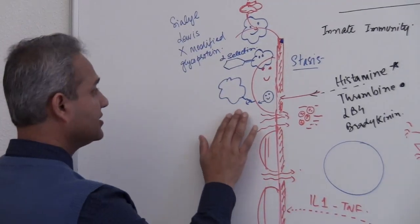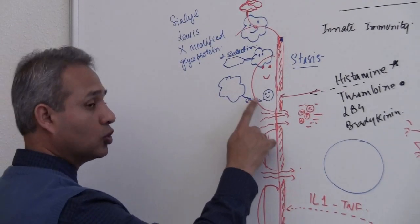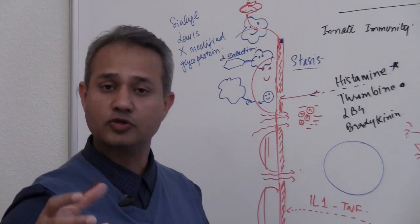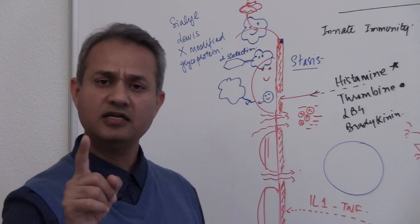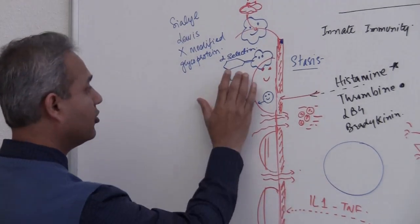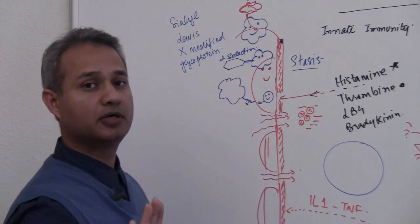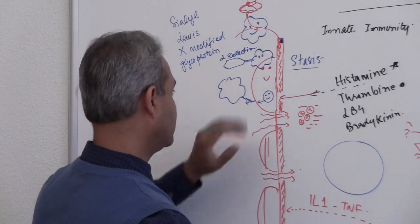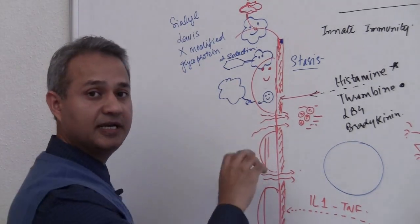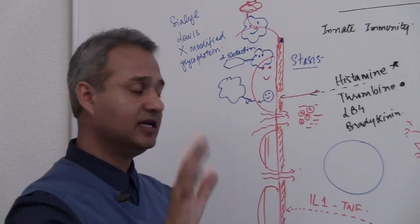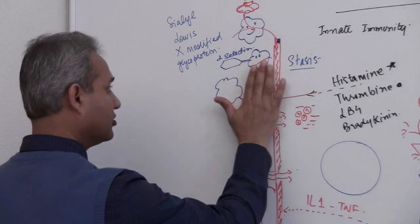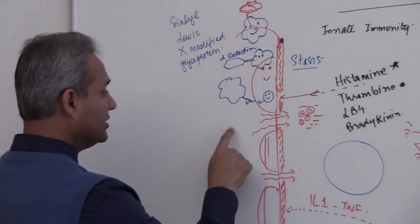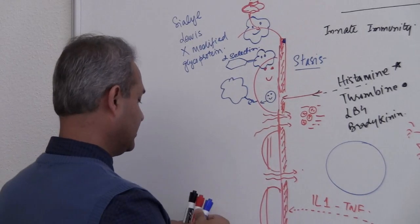Just like that fighter plane coming to the runway to slow down, the end result is that this neutrophil, as part of rolling, is going to slow down as well. What we want is for this neutrophil to stop. We are reducing the speed by engaging the selectin on the endothelial surface and the selectin on the neutrophil.